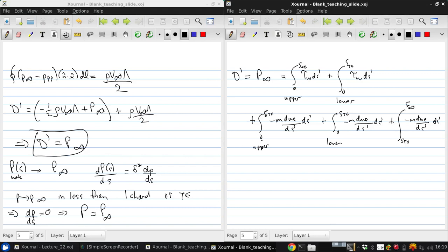Now, this is complicated, but we can write this very compactly as drag per unit span equals P infinity, which is just the integral of the shear stress over the airfoil, plus the integral of negative M dE dS dS over the airfoil and the wake. And we're going to call this equation 1.